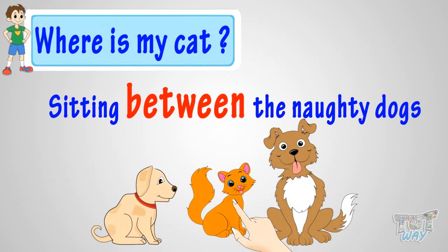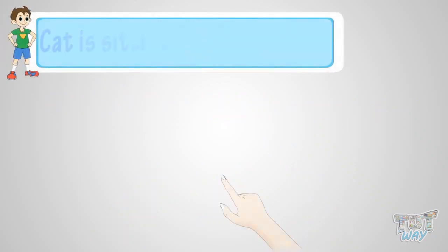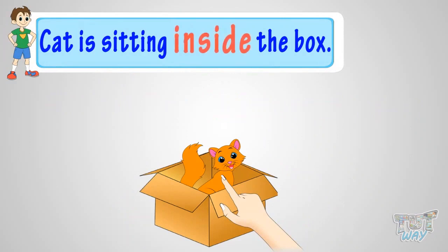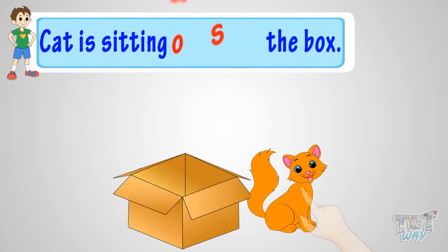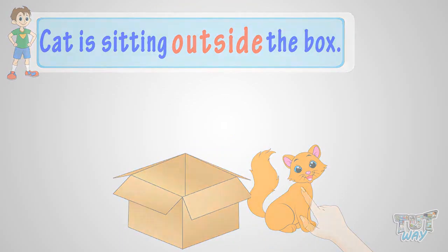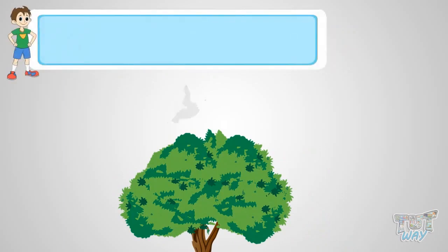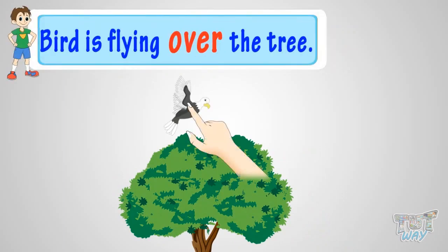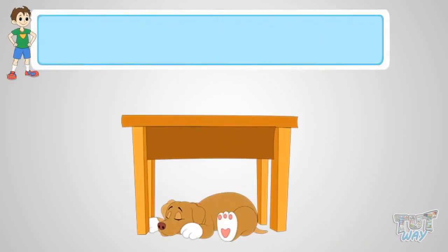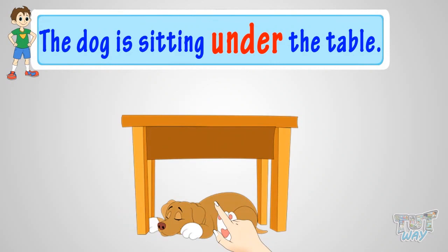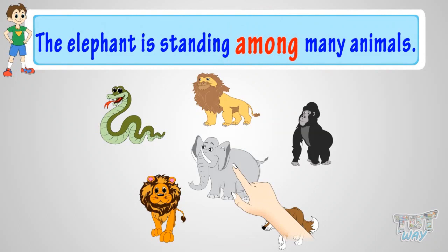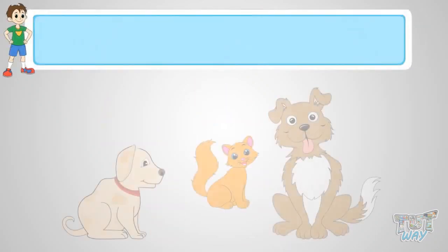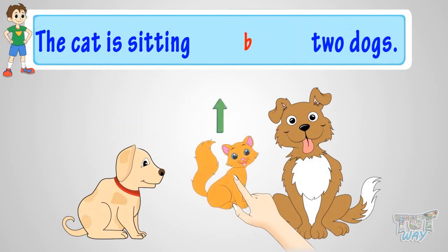So, kids, what have we learnt? We have learnt: here, the cat is sitting inside the box. Here, the cat is sitting outside the box. Here, the bird is flying over the green tree. Here, the dog is sitting under the table. Here, the elephant is standing amongst many animals. And here, the cat is sitting between two dogs.